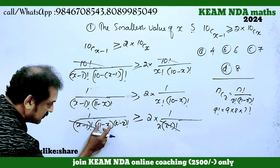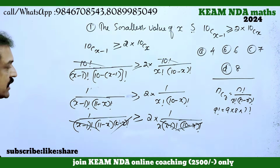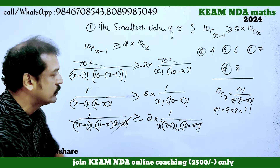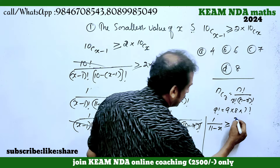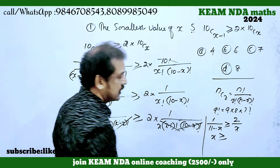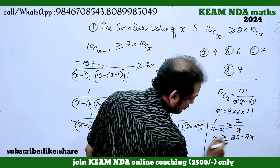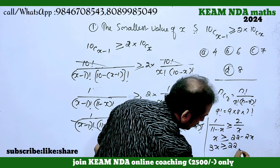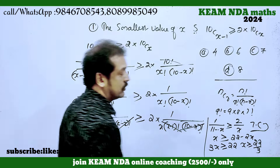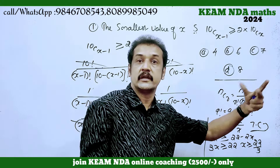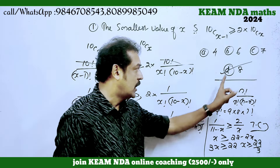After cancellation we get 1 over (11 minus x) greater than 2 over x. Cross-multiplying: x greater than 22 minus 2x, so 3x greater than 22, giving x greater than 22 divided by 3, which means x greater than or equal to 8.